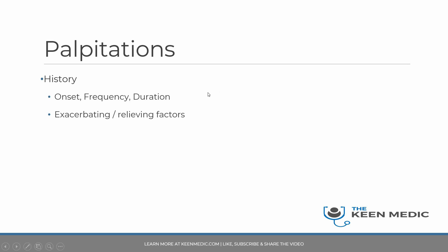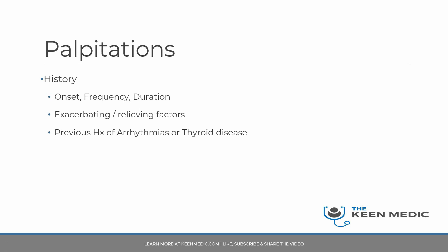Consider exacerbating and relieving factors: what situations trigger the palpitations — are they at rest, moving around, in stressful situations, or have they had caffeine recently? Any history of arrhythmias or thyroid disease is extremely relevant. Some patients may have histories of supraventricular tachycardias (SVTs) even from childhood, may have had ablation therapy, and may have had a recurrence, so that history is important.